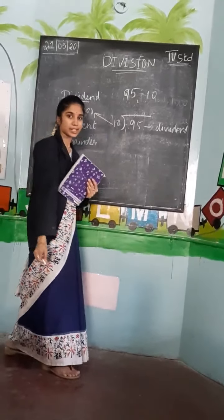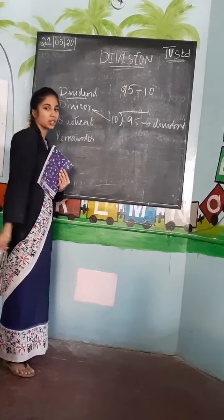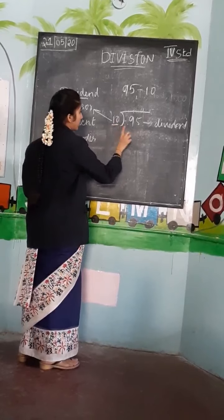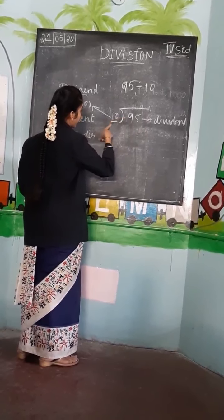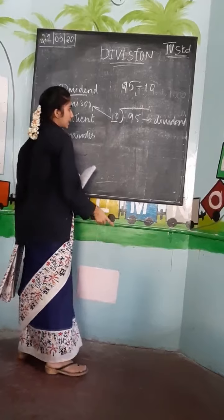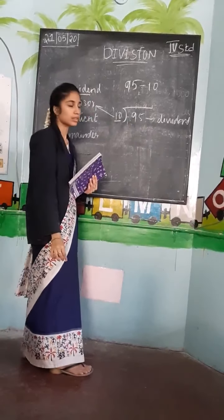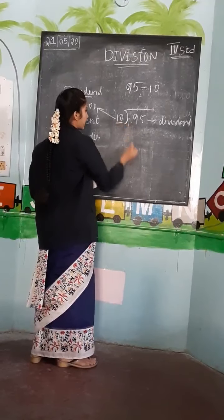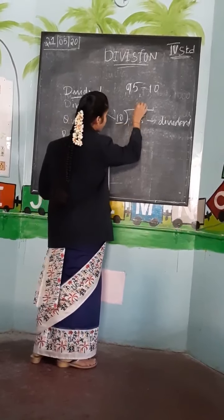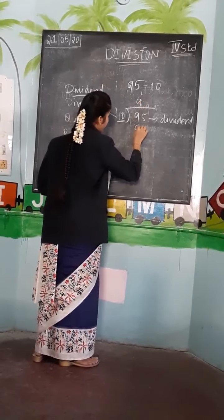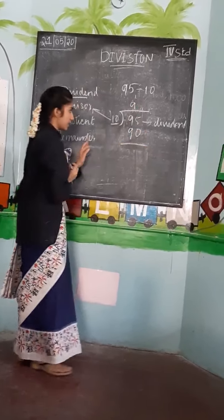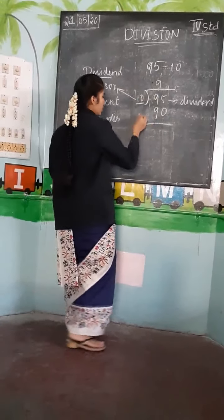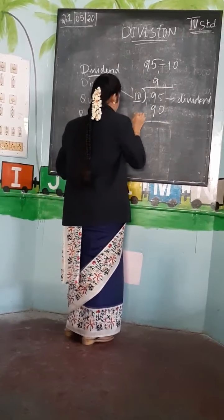In multiplication, tables are important, and in division also tables are important. For 95 divided by 10 — in the 10 times table, will you get 95? No. What do you get in the 10 times table? You get 90. When you get 90, that means 10 nines are 90. So 10 nines are 90.